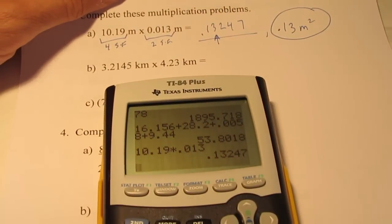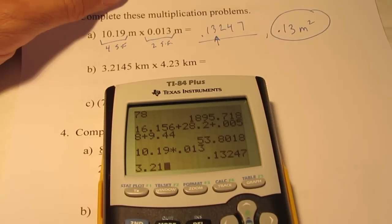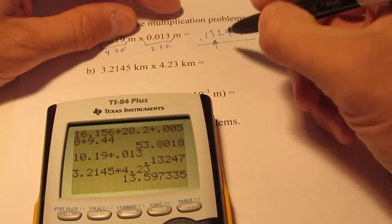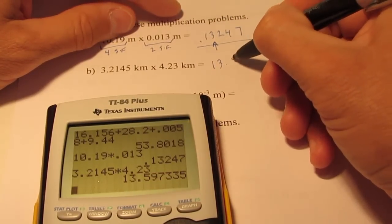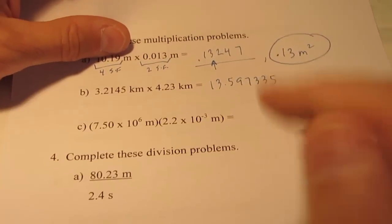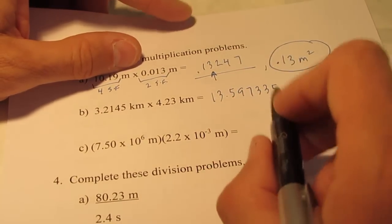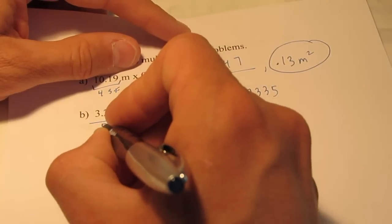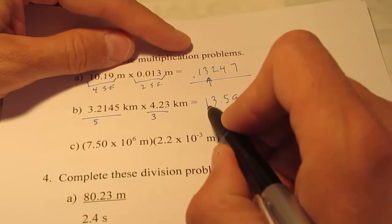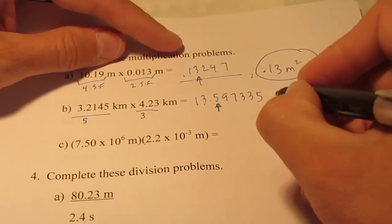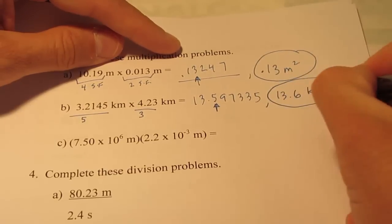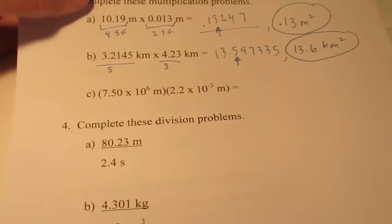Let's take a look at letter B. 3.2145 times 4.23 kilometers. My calculator says .13.597335, which is a ridiculous answer. It has way too many significant figures. This measurement has five sig figs. This has three sig figs. My answer can have three. So, I'll count over three from the left. I want to round right there. So, this would be 13.6 square kilometers. And, let's see.